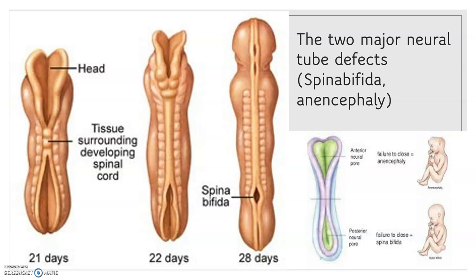The two most common neural tube defects are spina bifida and anencephaly. Spina bifida affects about 1,500 babies a year in the United States. If your baby has spina bifida, the tiny bones of the spine do not close completely, as you can see in this picture.